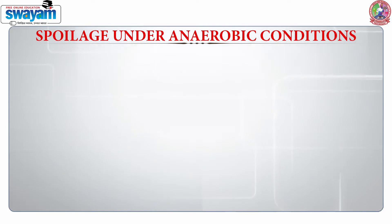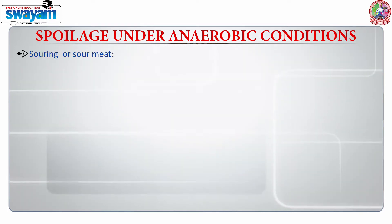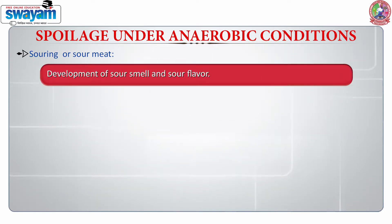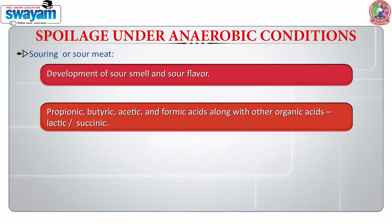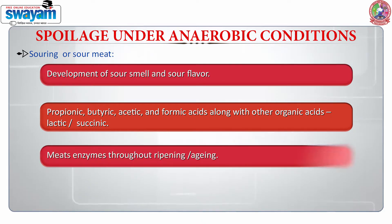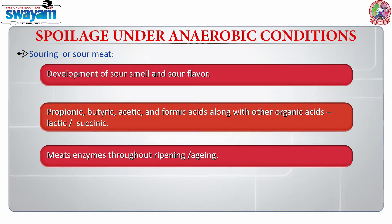Spoilage in meat can take place due to anaerobic conditions also. The most common spoilage pattern in meat under anaerobic conditions is souring or sour meat. This is due to the development of sour smell and sour flavor. We also see the production of various types of acids such as propionic acid, butyric acid, acetic acid and formic acid. Sometimes we also see the incidence of organic acids such as lactic and succinic acid.